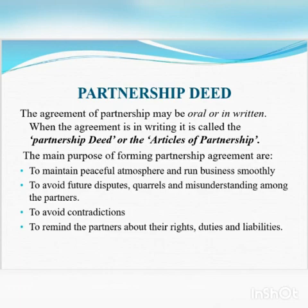When the agreement is in writing, it is called a partnership deed or the articles of partnership. The main purposes of forming a partnership agreement are: to maintain a peaceful atmosphere and run business smoothly; to avoid future disputes, quarrels and misunderstanding among the partners; to avoid contradictions; and to remind the partners about their rights, duties and liabilities.